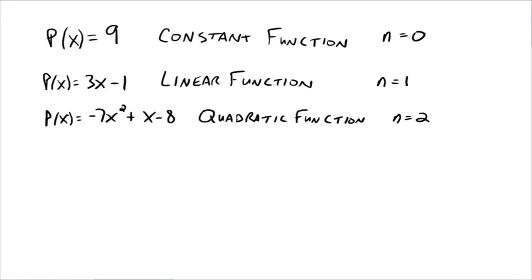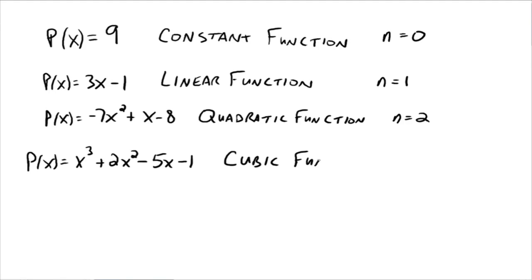That generic polynomial is just saying: start with your highest exponent and decrease by 1 as you write the terms. Another one we use quite a bit is the third power — for example, x cubed plus 2x squared minus 5. This is a third-degree polynomial called a cubic function, n equals 3. So: a third-degree polynomial is cubic, a second-degree is quadratic, a first-degree is linear, and a zero-degree is the constant function. For the fourth degree it's called quartic, and fifth degree is quintic, but constant through cubic are the ones we'll be working with the most.